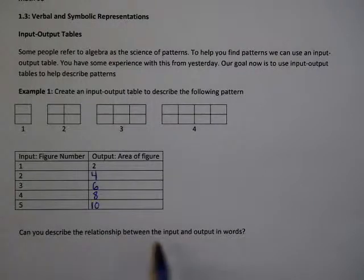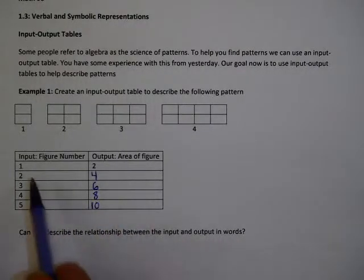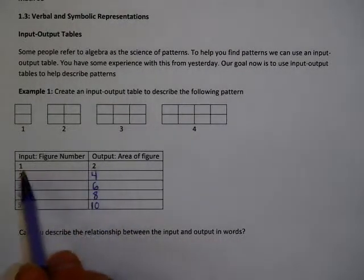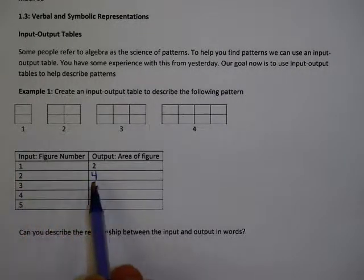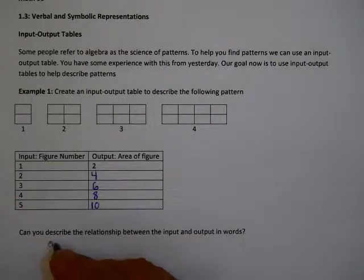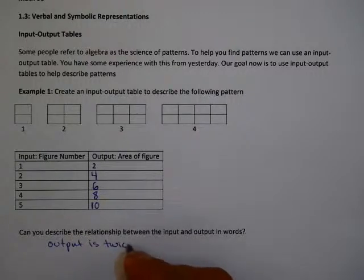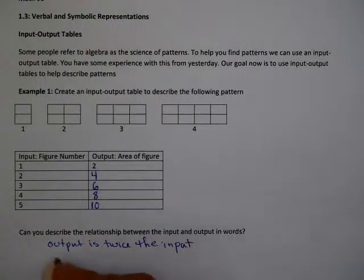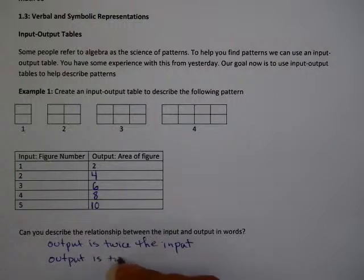Can you describe a relationship between the input and output in words? If you look at these numbers, you'll notice when the input is one, the output is two; when the input is two, the output is four; when the input is three, the output is six, and so on. One way to describe this is that the output is twice the input, or more mathematically, the output is two times the input.